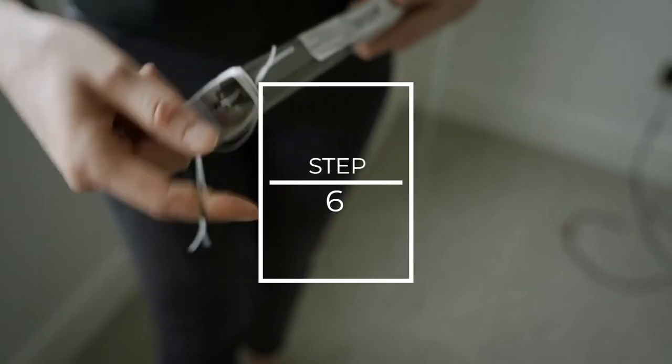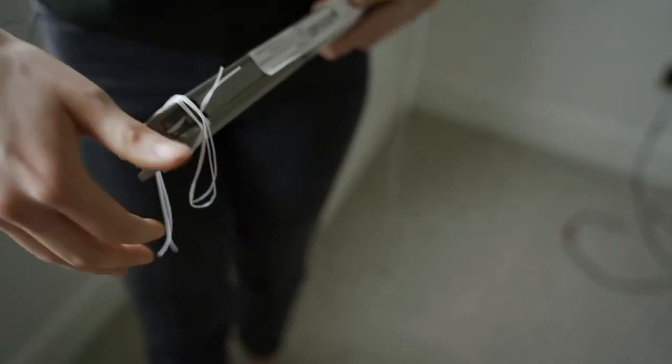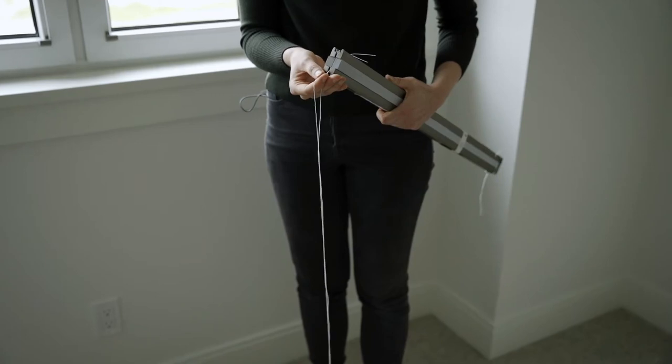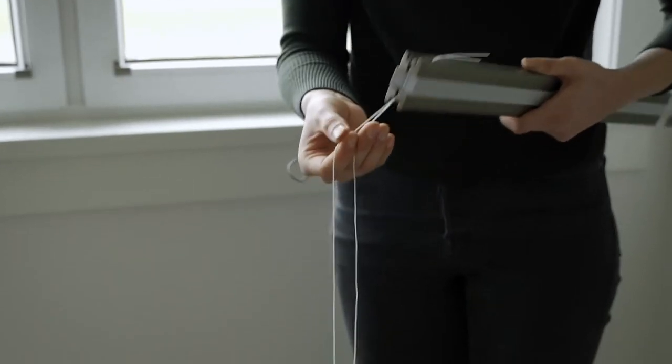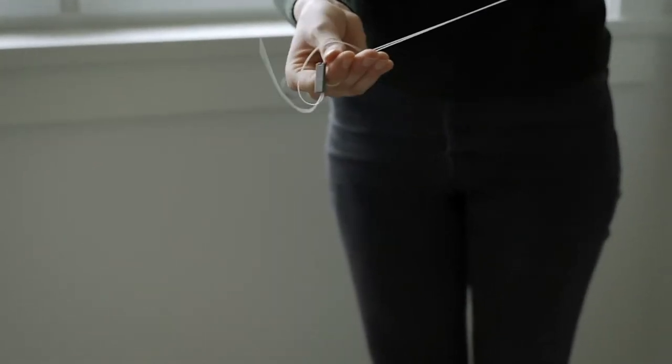Step 6. Carefully unwind the strings wrapped around one side of the blind. Run your finger in between both of the strings to check that everything is detangled. Twists in this string will inhibit the function of the blind.